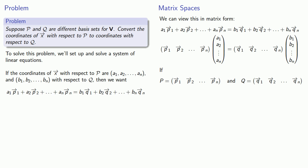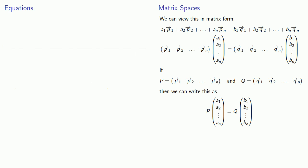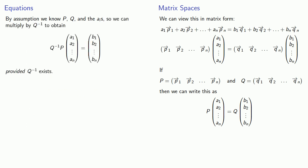That allows us to write our equation as matrix P times the column vector of the coordinates equals matrix Q times the column vector of the coordinates. Now, by assumption, we know both P and Q because we have the basis p and the basis q. We also know all of the a_i's because those are the coordinates of our vector with respect to P. So that says we can solve for the b_i's by multiplying by the multiplicative inverse of Q, provided that this multiplicative inverse exists. More generally, this is the left-inverse of Q.